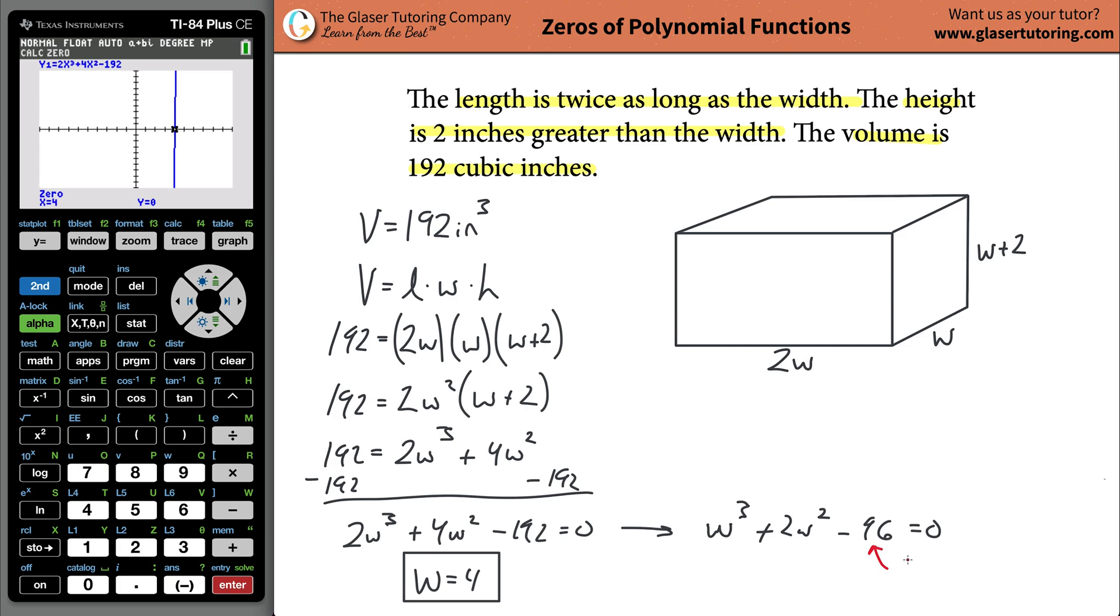Let's use the rational zero theorem. We can find the factors of the constant term, call those factors P. We can find the factors of the leading coefficient, which is the coefficient of the greatest x value, which is one. Call them Q. Take those factors P, divide them by the factors Q. This will give us a list of possibilities of possible rational zeros for the function.